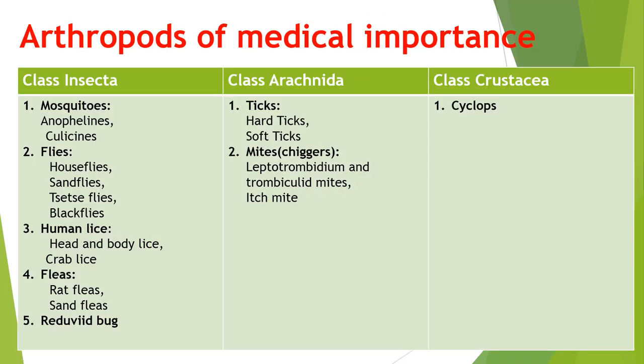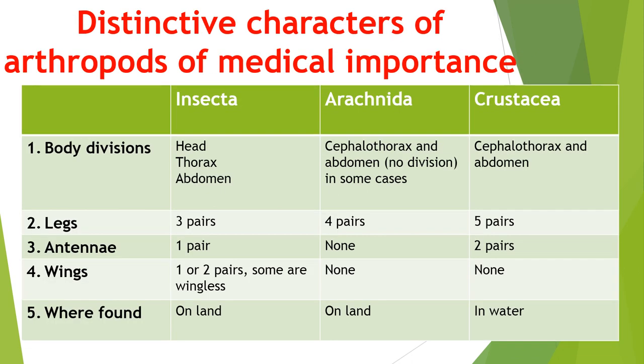Coming to the classification of arthropods of medical importance: the phylum Arthropoda consists of three important classes — Class Insecta, Class Arachnida, and Class Crustacea. In Class Insecta come mosquitoes, flies, human lice, fleas, and reduviid bugs. Class Arachnida consists of ticks and mites. Class Crustacea has only one member, which is Cyclops. In Class Insecta, the body is divided into head, thorax, and abdomen. In Arachnida and Crustacea, the body is divided into cephalothorax and abdomen. Class Insecta has three pairs of legs, Arachnida has four pairs, while Crustacea has five pairs.